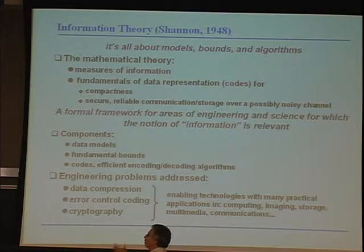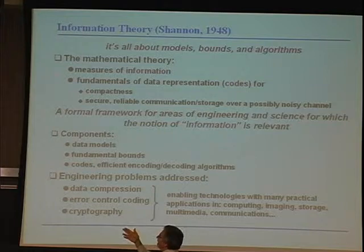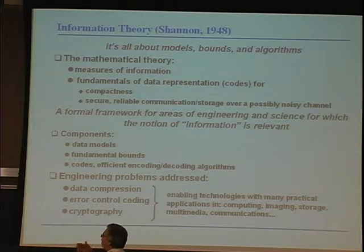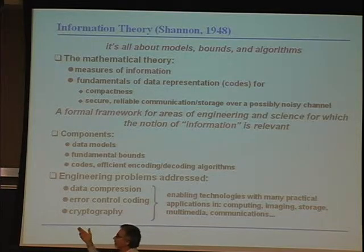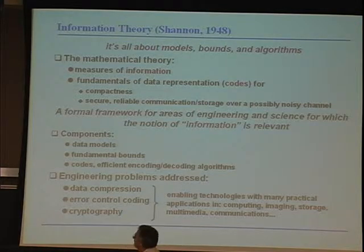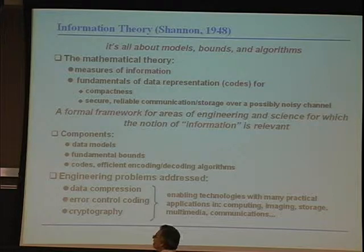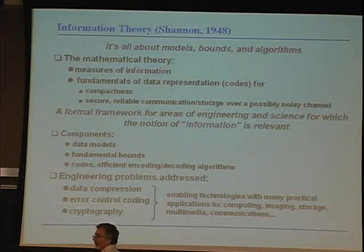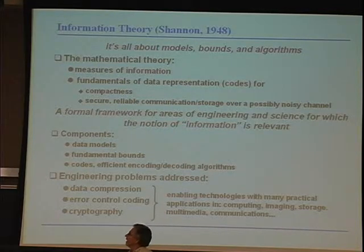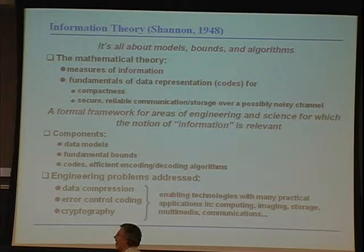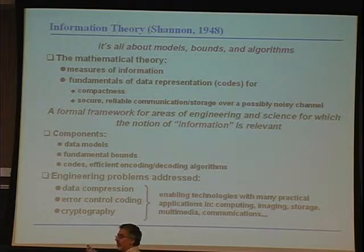What is the mathematical theory? There are measures of information — this is about the models. There are fundamentals of data representation: codes for compactness (data compression), and for secure and reliable communication (error correcting codes), and some aspects of cryptography. More generally, information theory provides a formal framework for areas of engineering and science for which the notion of information is relevant. Shannon was targeting the specific problem of digital communication, and what was novel about his approach is the fact of looking at practical problems within a formal framework. That's the main contribution of Shannon to science.